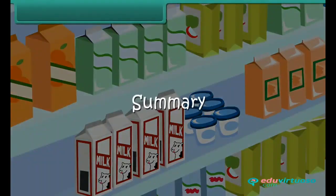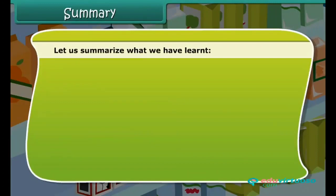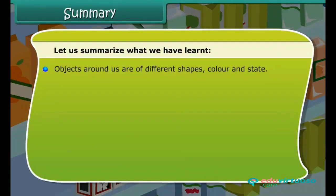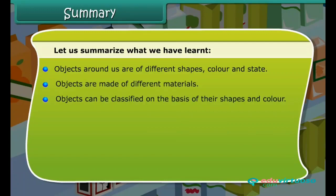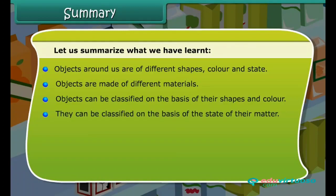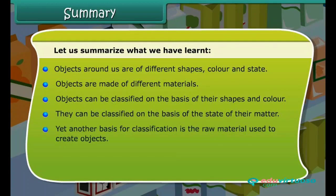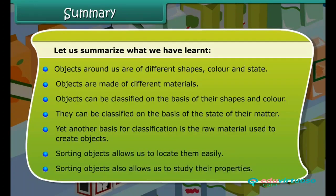Summary: objects around us are of different shapes, color, and state, and are made of different materials. Objects can be classified on the basis of their shapes and color. They can also be classified on the basis of the state of matter. Yet another basis for classification is the raw material used to create objects. Sorting objects allows us to locate them easily and also allows us to study their properties.